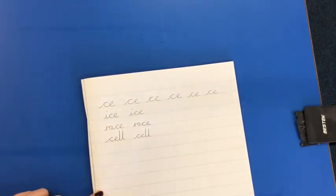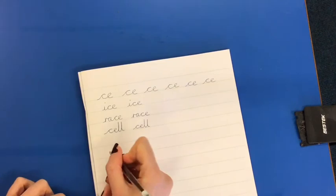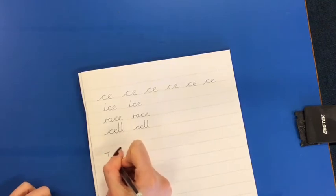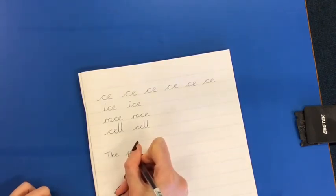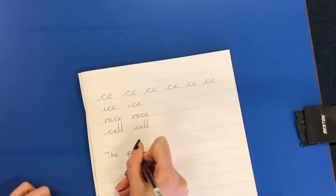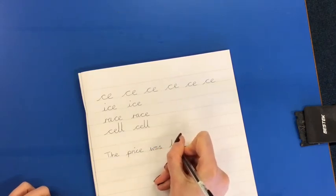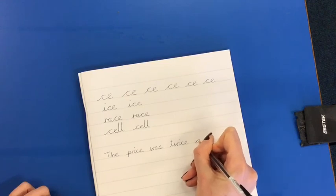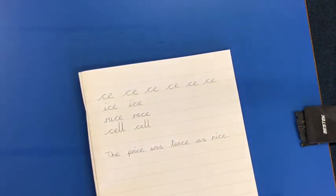There we go. And when we've done those words we can try a challenge sentence. The challenge sentence to try and write it as neat as you can, we're going to try today: the price was twice as nice. So capital T, not joining capitals, but big finger space. Price, price was, twice, twice, as, nice. Can you make yours neater than mine? I'm sure that you can. Have fun.